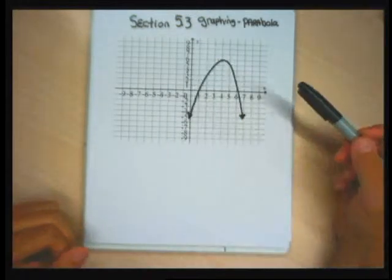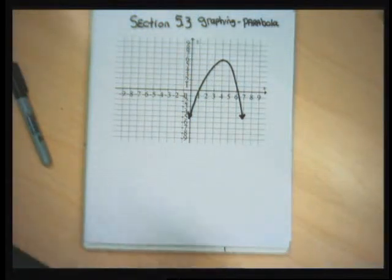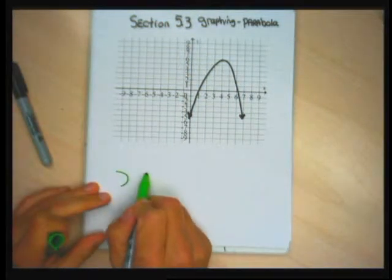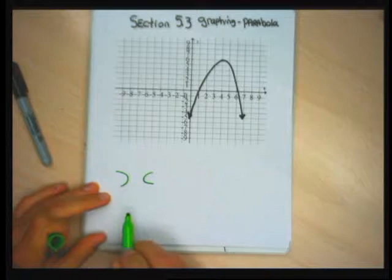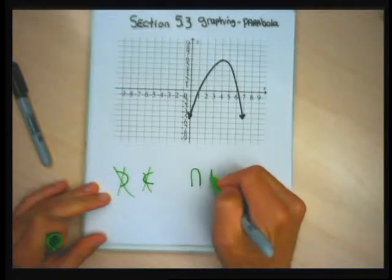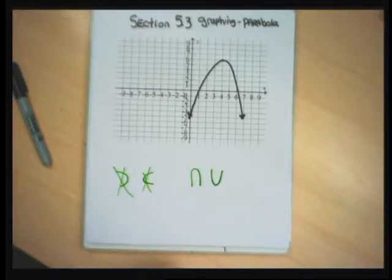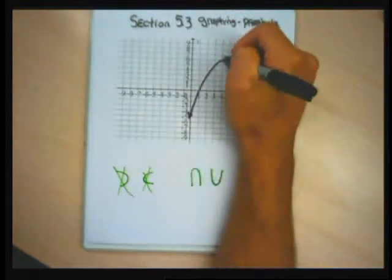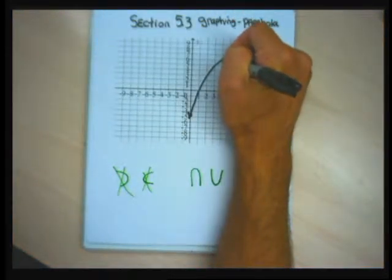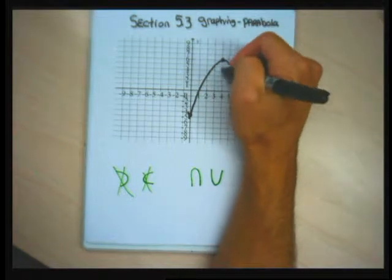They're either going to open up or down. They can open left or right, but if they open left or right, they're not functions. Everything we're going to graph is going to be a function, so we're only going to graph U's that open down or open up. When we produce a graph of a parabola, we need to identify features of the parabola.